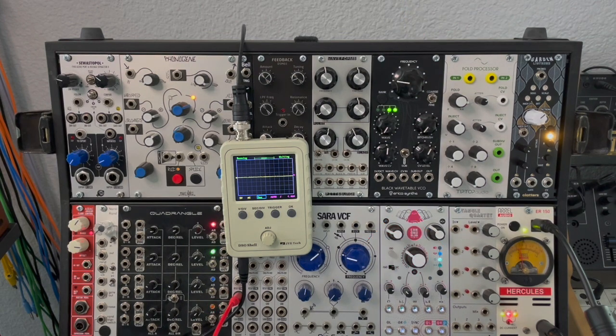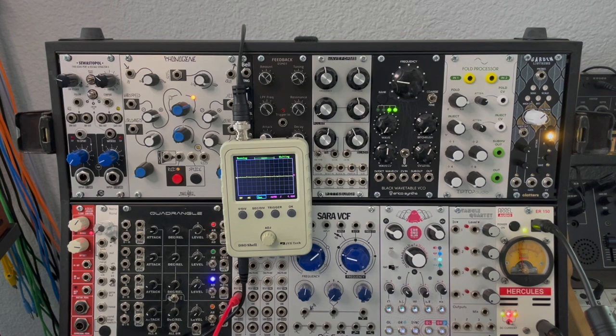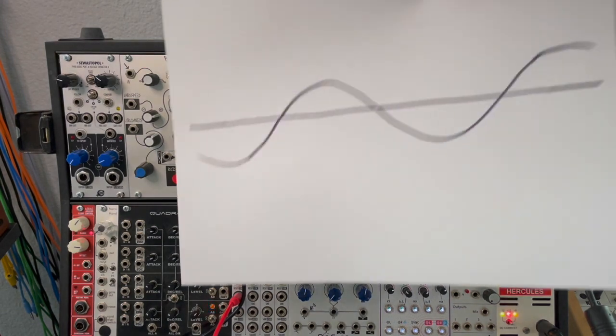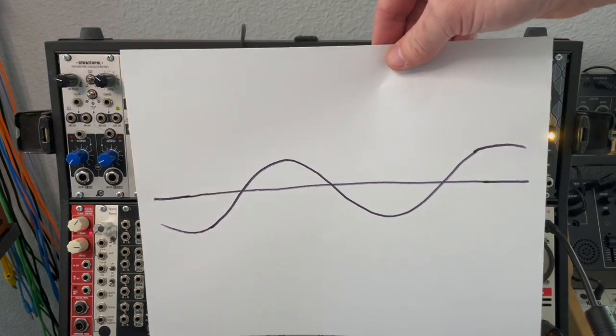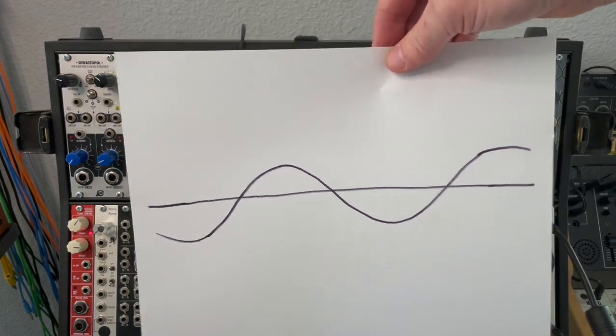Now what does an oscillator do? Its job is to generate waveforms. So if I told you to draw me a waveform you'd probably draw something like this, and that is indeed a sine wave.